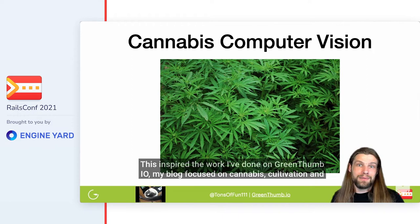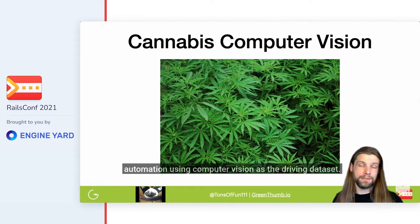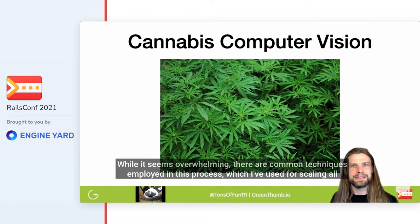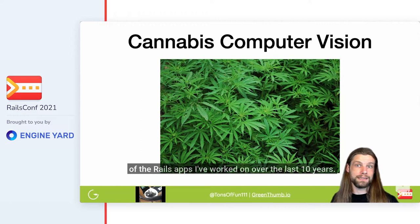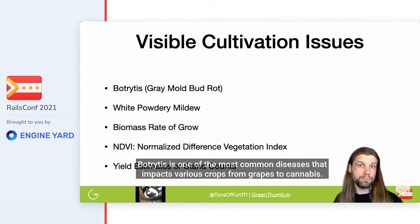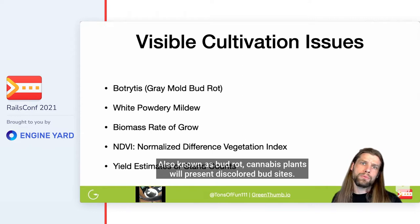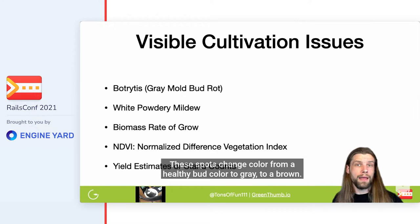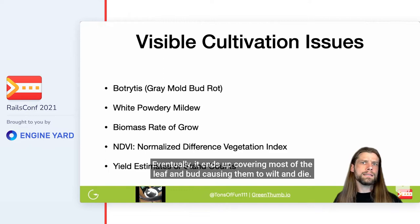This inspired the work I've done on GreenThumb.io, my blog focused on cannabis cultivation and automation using computer vision as the driving data set. There are common techniques employed in this process which I've used for scaling all of the Rails apps I've worked on over the last 10 years. Let's consider some of the challenges that cultivation has to offer that can be observed visually. Botrytis is one of the most common diseases that impacts various crops from grapes to cannabis. Also known as bud rot, cannabis plants will present discolored bud sites.